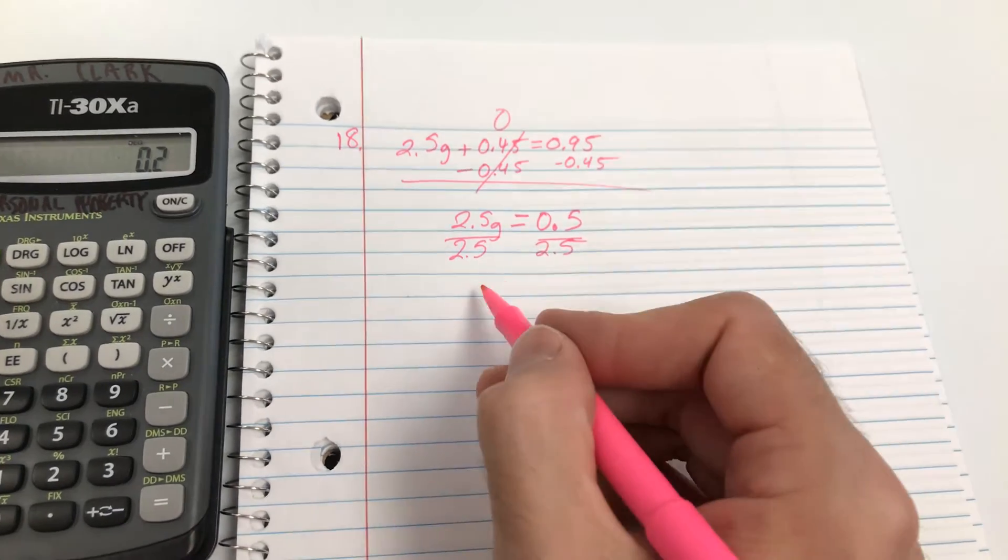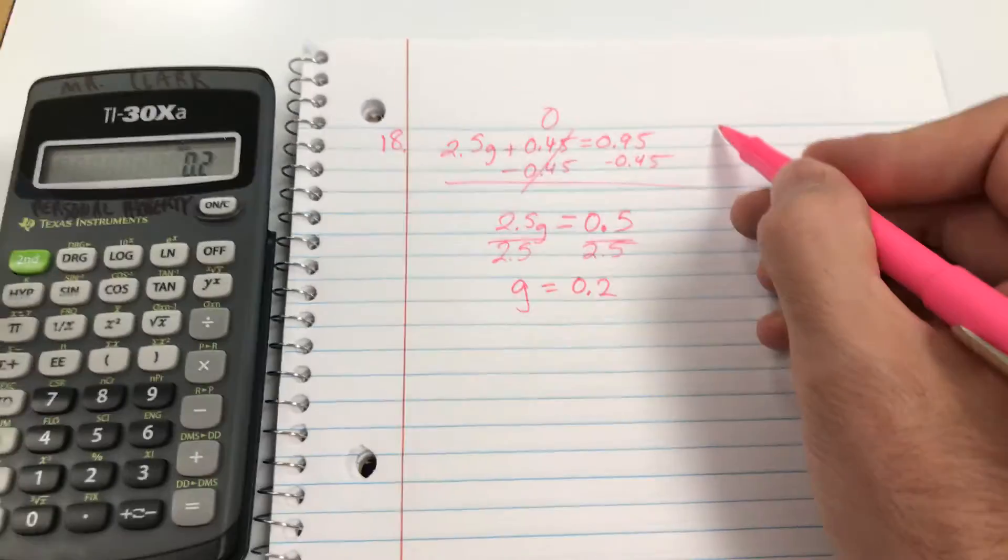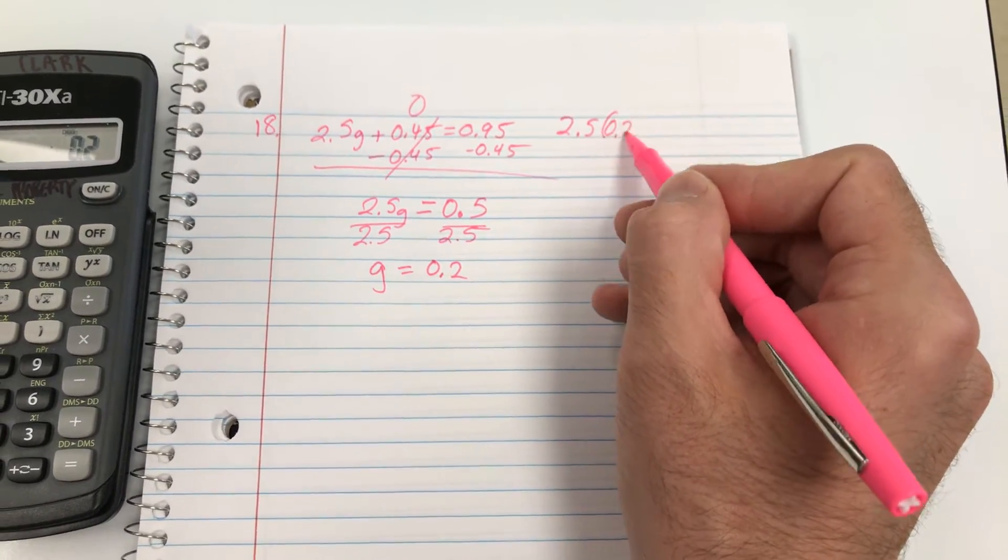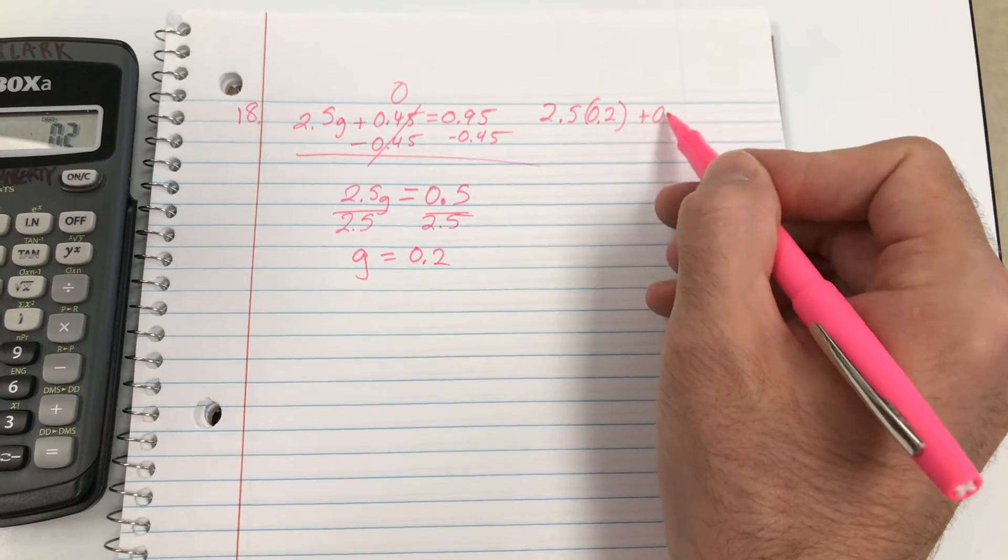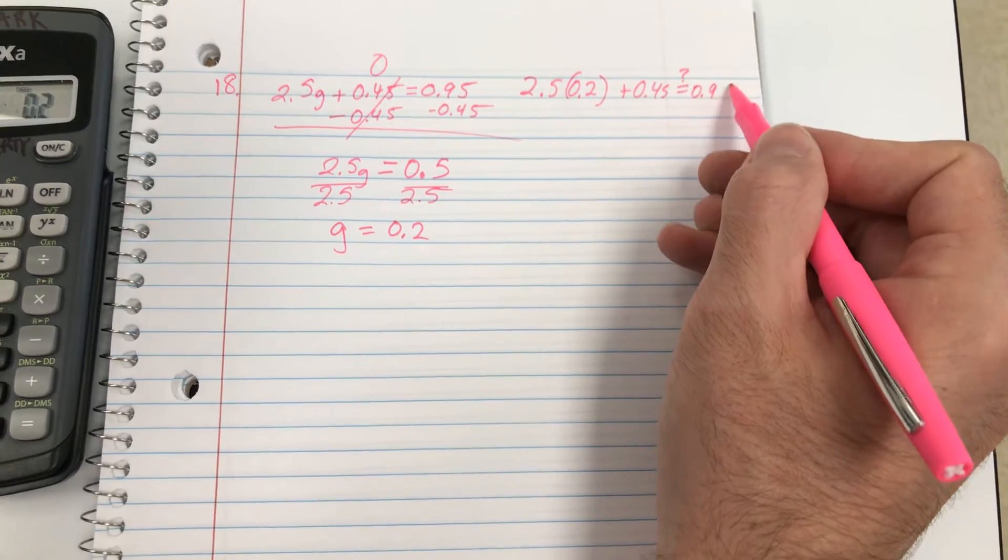We get g equals 0.2. So 2.5 times g, which is now 0.2, plus 0.45 should equal 0.95.